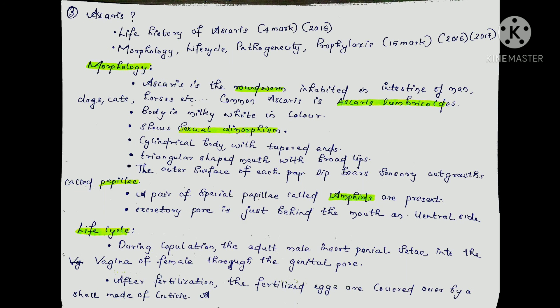Morphology: Ascaris is a roundworm, found as a parasite in the intestine of man, dogs, cats, horses, etc. The common species is Ascaris lumbricoides. Body is milky white in color. It shows sexual dimorphism. Body is cylindrical with tapered ends. Triangular-shaped mouth with three broad lips. The outer surface of each lip has sensory outgrowths called papillae. A special papillae called amphids are present. The excretory pore is just behind the mouth on the ventral side.